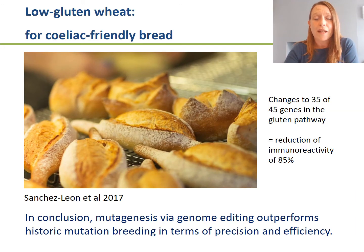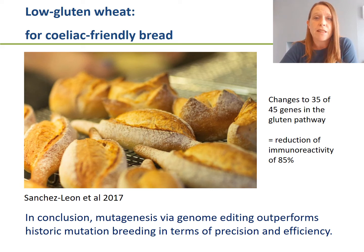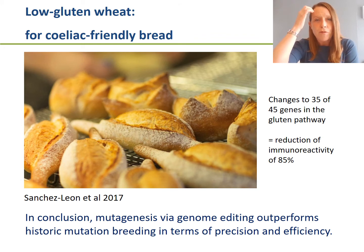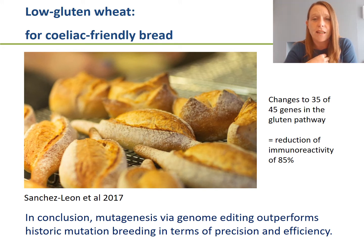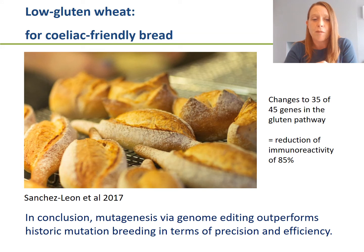Looking at much more complex traits, this is research carried out in Spain where genome editing was used to create a low-gluten wheat to make a coeliac-friendly bread. They managed to target 35 out of 45 genes involved in the gluten pathway, resulting in an 85% reduction in immunoreactivity. If we wanted to achieve this through conventional mutation breeding, it would have been an impossible task to specifically target this number of genes without the background noise of random mutation. We can conclude that genome editing really does outperform historic mutation breeding in terms of precision and efficiency.